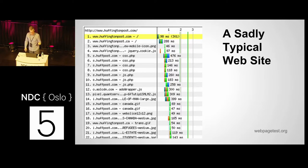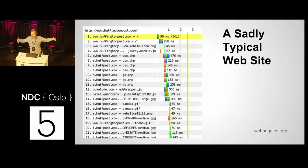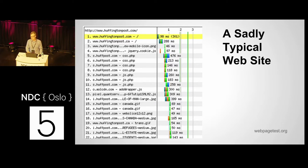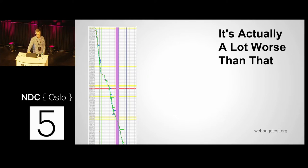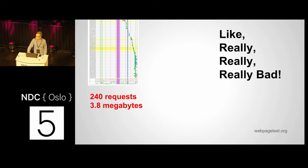I always pick on Huffington Post as an example of a site that is a nightmare — though it's actually pretty typical of WordPress websites and frameworks like Angular that often grow to be very big. If you're using something like Bootstrap, most people don't try to reduce the amount of Bootstrap — they just dump it all in. You end up with 240 requests and 3.8 megabytes for one page. And again, this is not unusual — the average webpage size is creeping up on two megabytes.